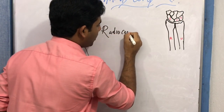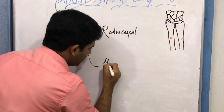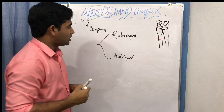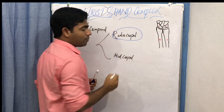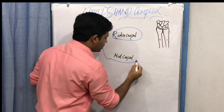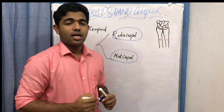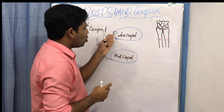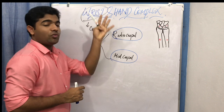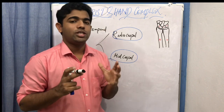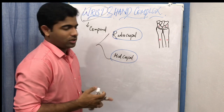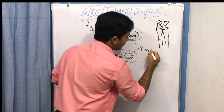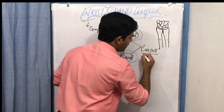The word radiocarpal is self-explanatory — it means the radius is articulating with the carpal bones. The midcarpal joint means it is the joint between the carpal bones. These two individual joints together form the wrist complex or compound wrist joint. Since there is a carpal involvement, the wrist complex can also be known as the carpus.